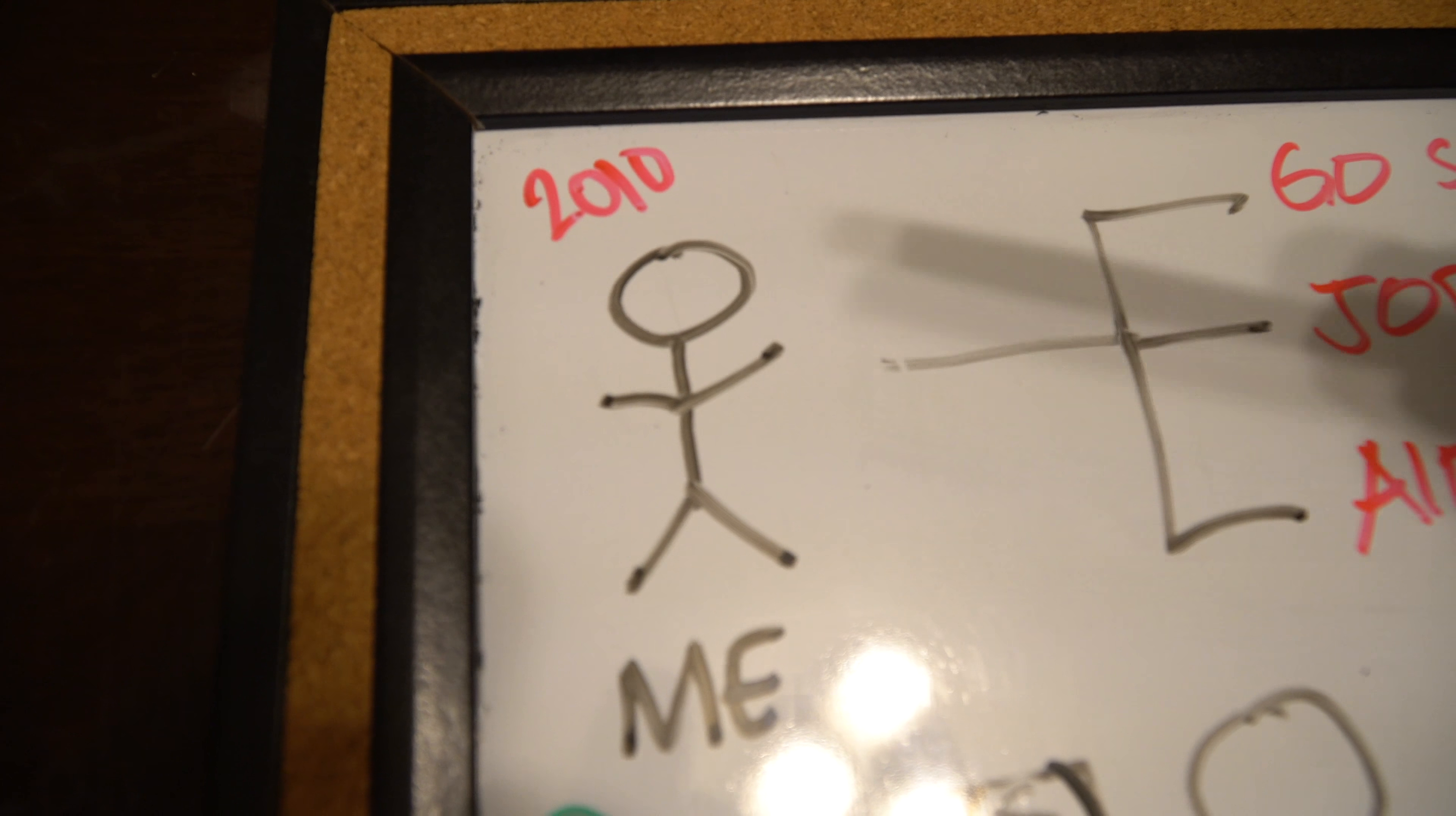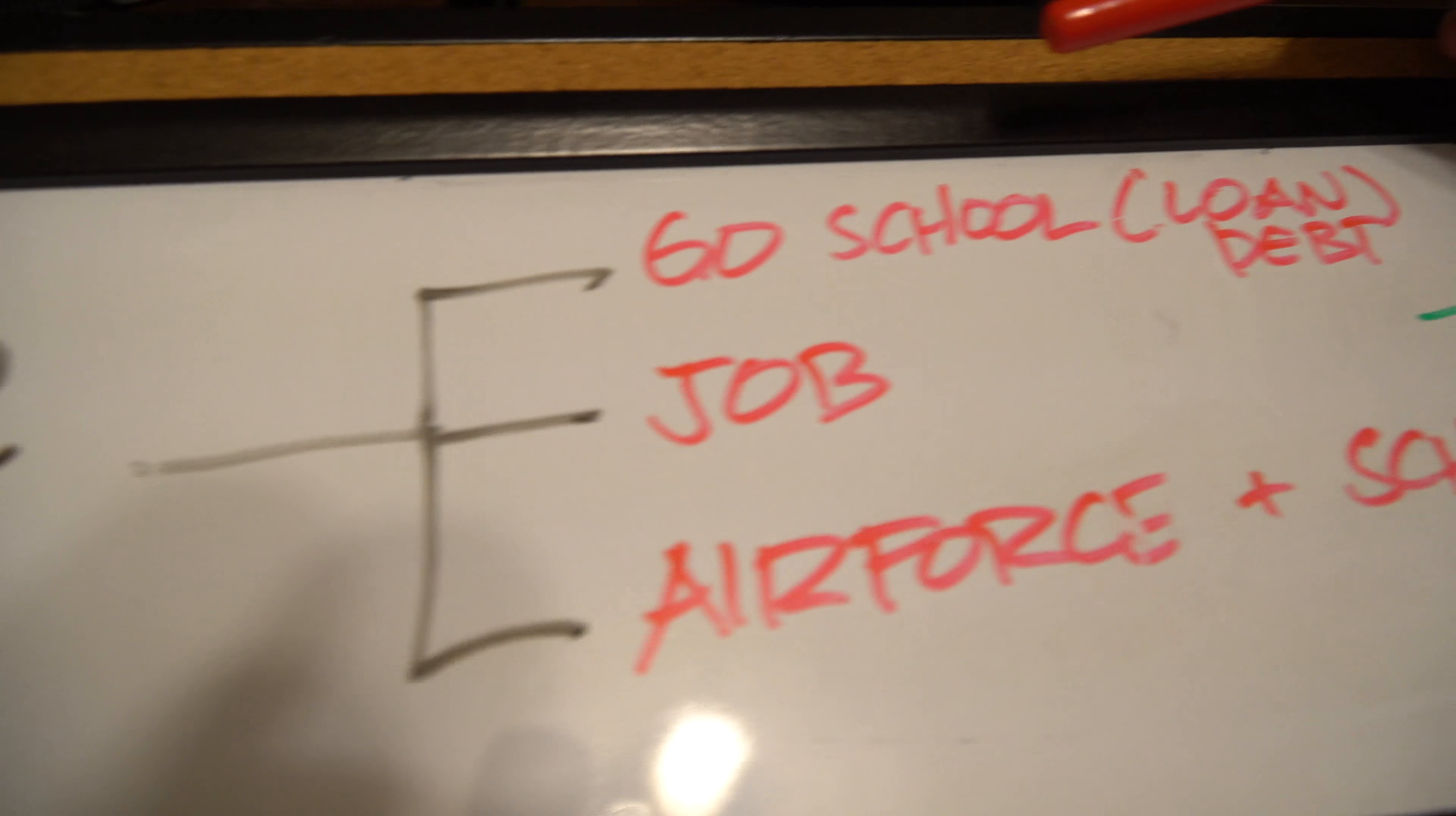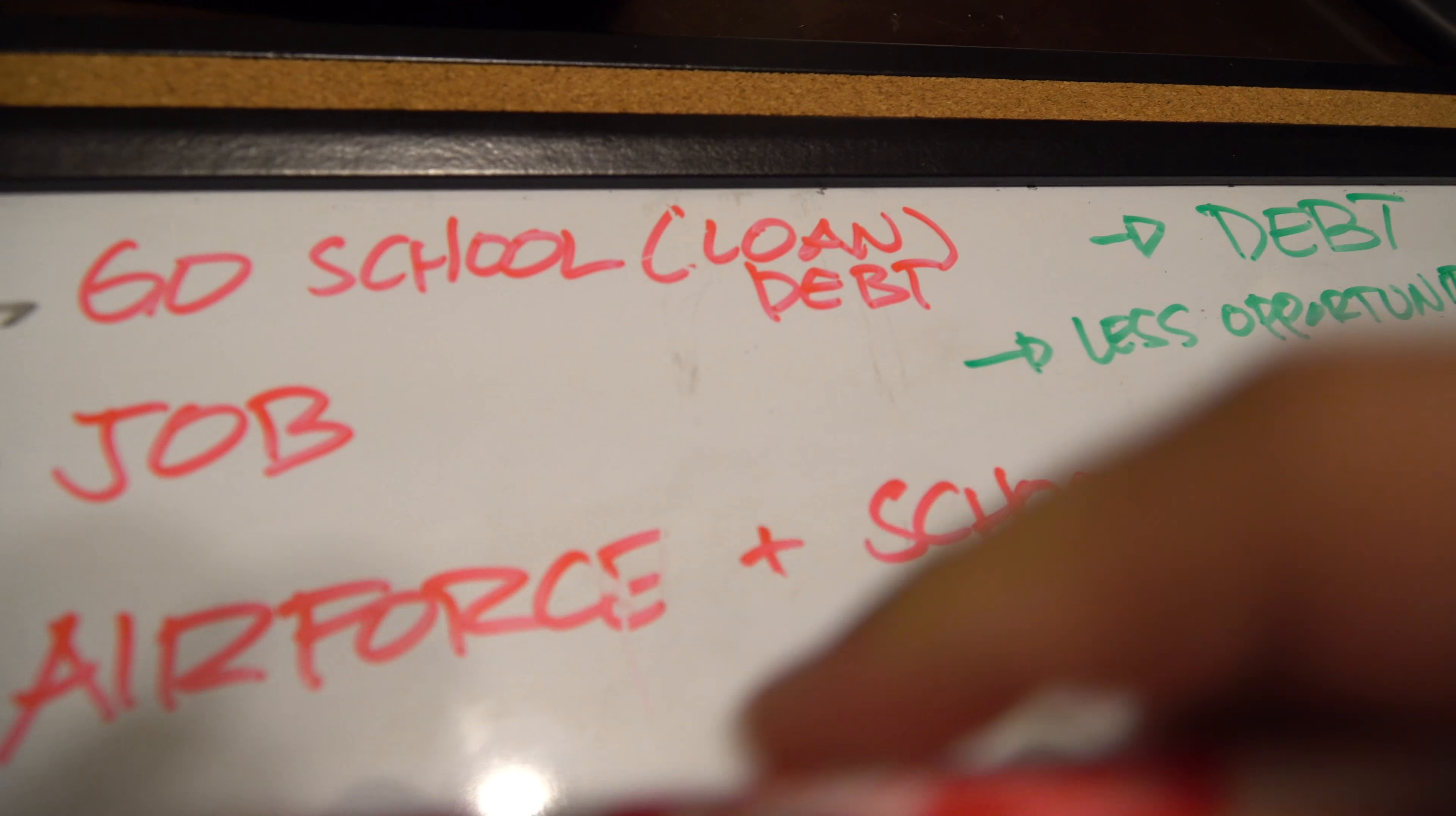The first reason is education. So back in 2010, I got to the States. I had to wait a year before I could join the military, the Air Force. So this is me right here, and then I pretty much had three options. The first one is I could go to school, but I have to get a loan from the bank. To picture it out.